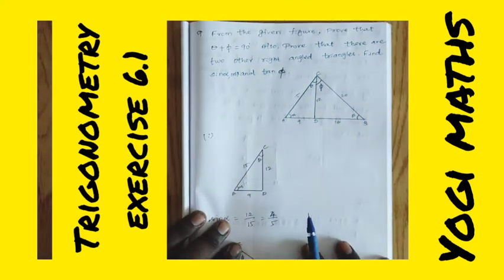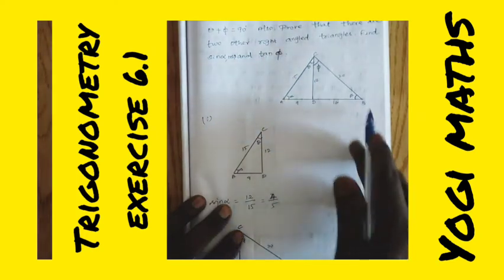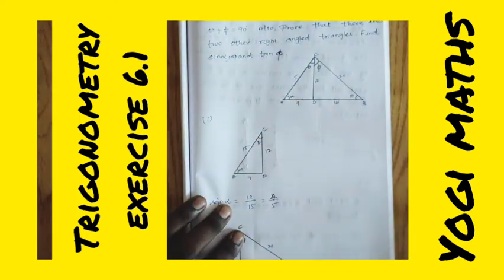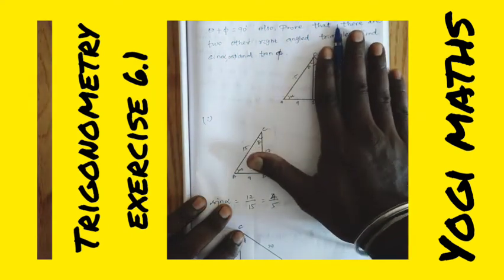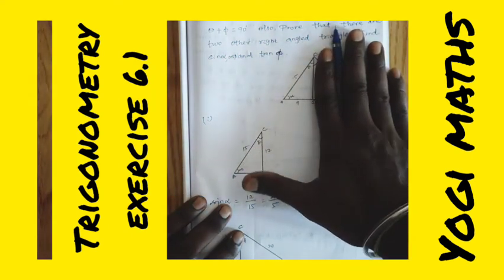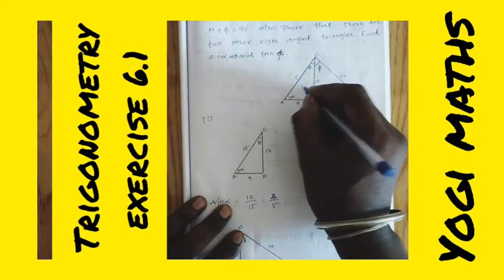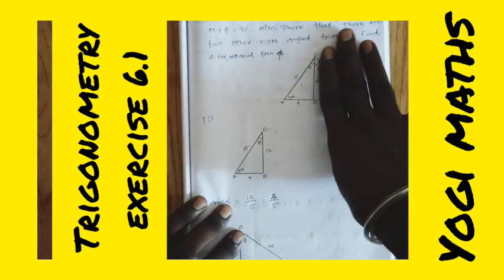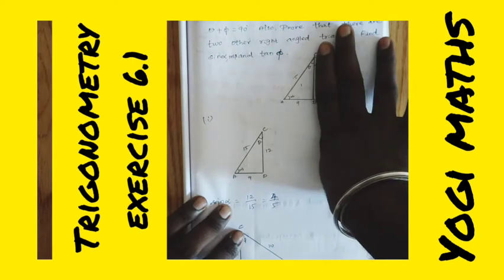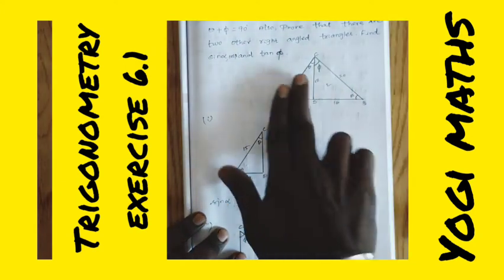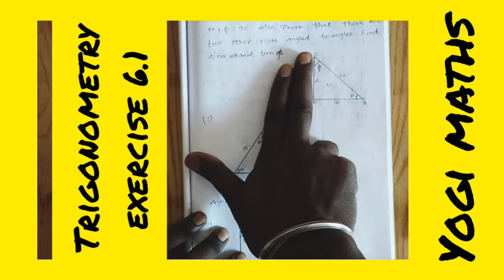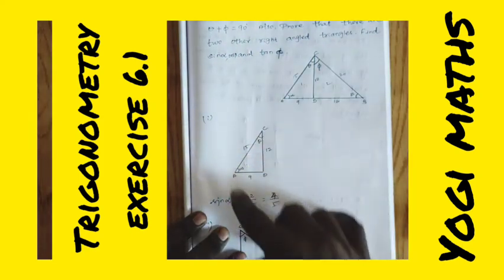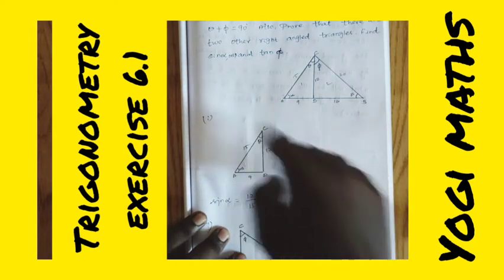For the proof, we're looking at the diagram. In the first diagram, we have triangle ACD. This is the first triangle we'll work with from the diagram to find the required values.